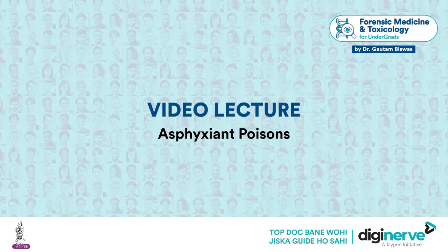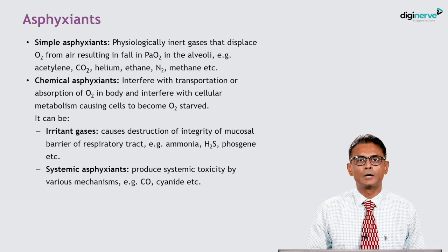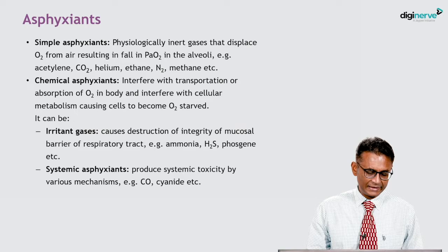Asphyxiants are categorized into simple asphyxiants and chemical asphyxiants. Simple asphyxiants are physiologically inert gases that displace oxygen from the air, resulting in a fall of partial pressure of oxygen in the alveoli. Examples are acetylene, carbon dioxide, helium, ethane, and nitrogen.